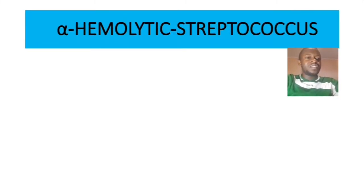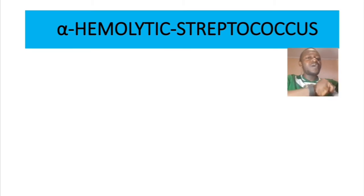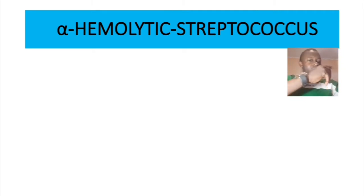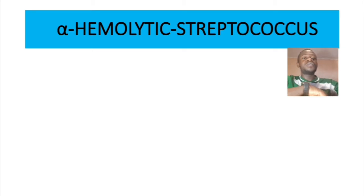Hello and welcome to Basic Medical Sciences. Please make sure you subscribe so that you won't miss any of our latest videos. In this video, we are talking about alpha-hemolytic streptococci. This bacteria causes partial hemolysis, forming a green pigment around the colonies from destroyed hemoglobin. The main species in this group are Streptococcus pneumoniae and the viridans streptococci group.